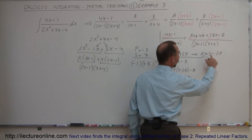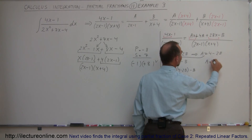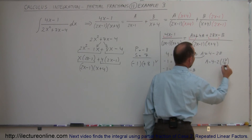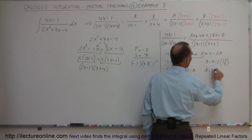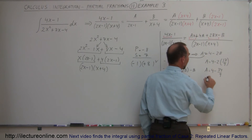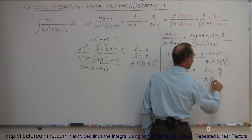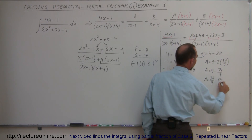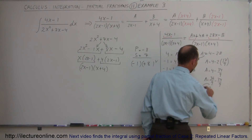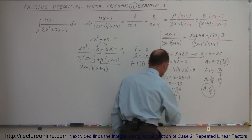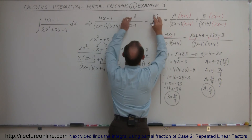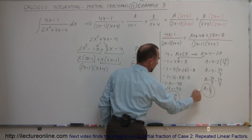Now I can find a, because I have a in terms of b. So a = 4 - 2b = 4 - 2(17/9) = 4 - 34/9 = 36/9 - 34/9 = 2/9. So a = 2/9 and b = 17/9.